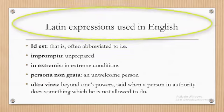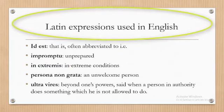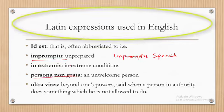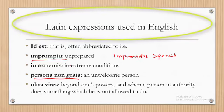'Impromptu' means unprepared — for example, 'an impromptu speech' is a speech that has not been prepared in advance. 'Persona non grata' means an unwelcome person — someone who is not wanted or welcomed. And with that, we've come to the end of today's lesson.